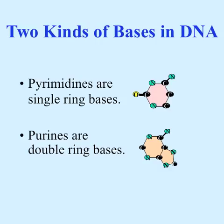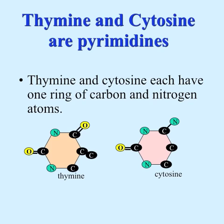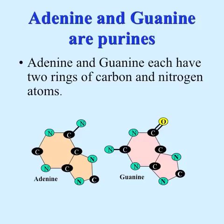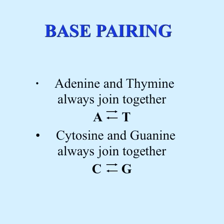The pyrimidines are single rings and the purines are double rings. A double and a single ring always go together so that the space between the sides of the ladder is uniform. Thymine and cytosine are pyrimidines — single rings. Adenine and guanine are purines — double rings. Two double rings would be too wide, and two single rings would be too narrow, so adenine always pairs with thymine (A-T), and cytosine always pairs with guanine (C-G).